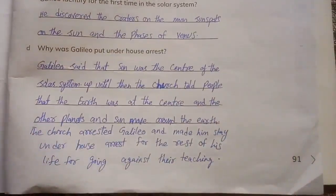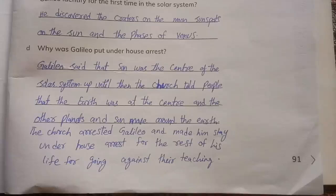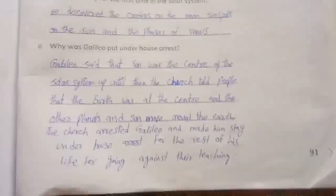Galileo said that the Sun was the center of the solar system. Up until then the church told people that the Earth was at the center and the other planets and the Sun moved around the Earth. The church arrested Galileo and made him stay under house arrest for the rest of his life for going against their teaching.